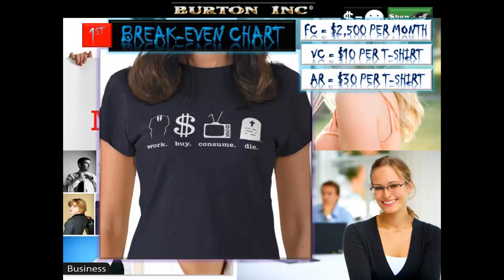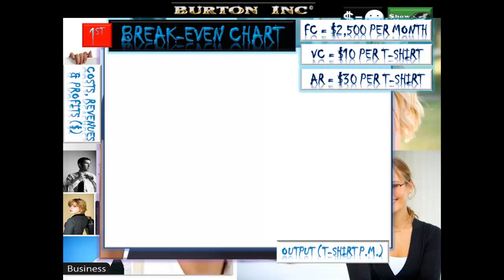The breakeven chart is the one you have to know — you're often asked to construct it in the IB Business and Management examination. It takes time, so it's typically worth a few marks. On the right-hand side we have our three essential pieces of information: fixed cost of $2,500, variable cost of $10 per t-shirt, and selling price of $30. Cost, revenues, and profits go on the Y-axis; output related to the good and time period go on the X-axis.